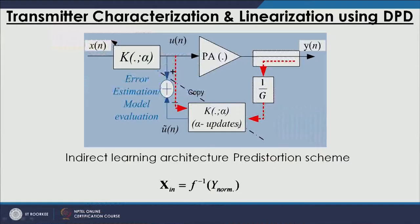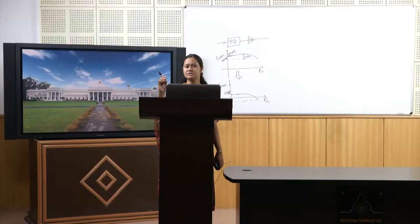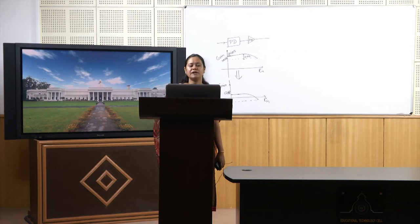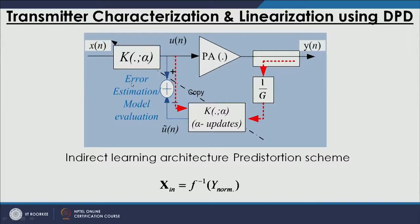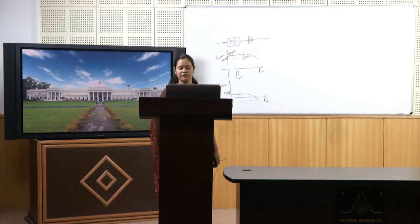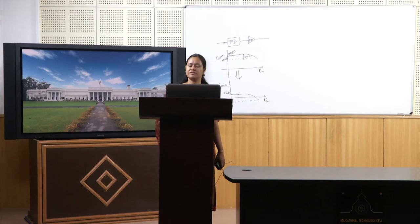Using Y(n) and U(n), we update our coefficients and build a non-linear model so that it generates IMD terms opposite to those of the power amplifier. Once we get this information, we update K-alpha, which is our pre-distorter element. For the first iteration, U(n) equals X(n), but after updating the pre-distorter equations, U(n) becomes a non-linear function of X(n) — non-linear in the opposite sense of the power amplifier.